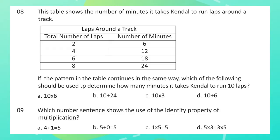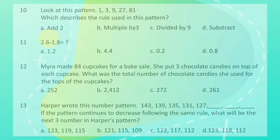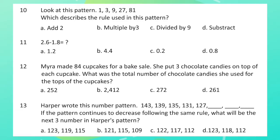Question 9: Which number sentence shows the use of the identity property of multiplication? Question 10: Look at the pattern: 1, 3, 9, 27, 81. Which describes the rule used in this pattern?